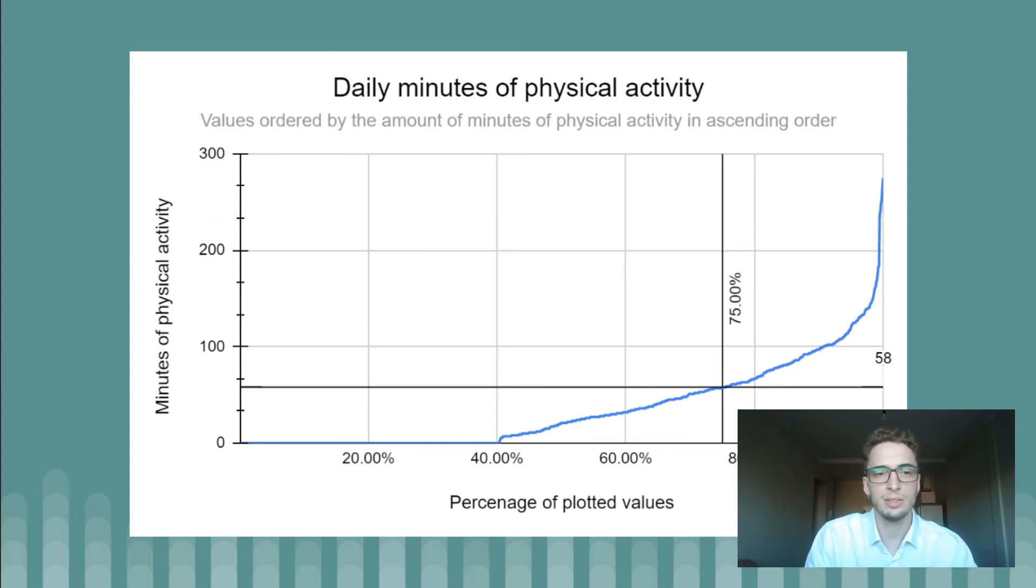We can see this organization on the x-axis of the visualization, in which for a better understanding I have used percentages. That is, the 20% that we can see on the x-axis refers to the 20% of days with the fewest minutes of physical activity.